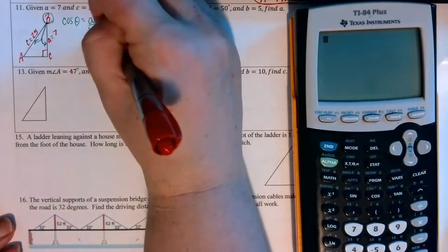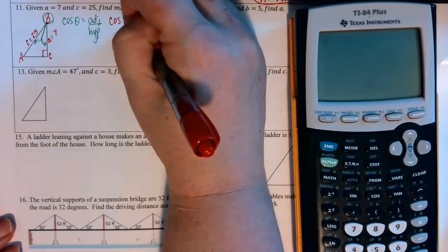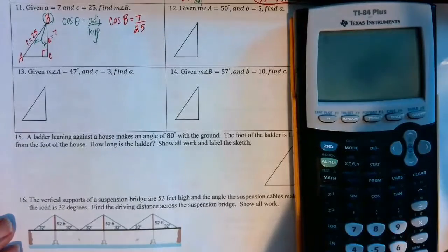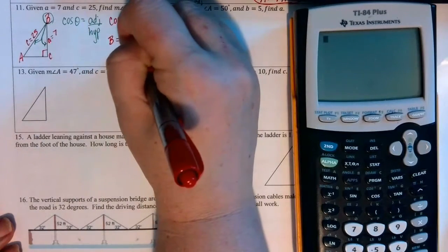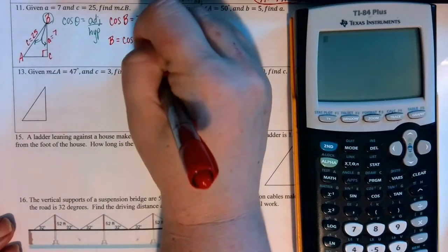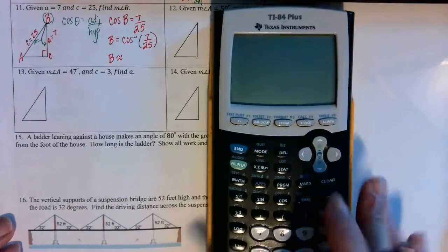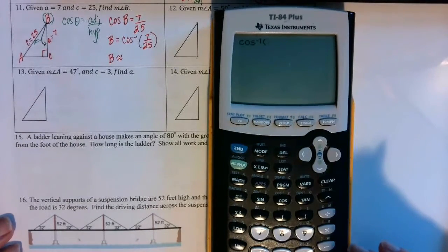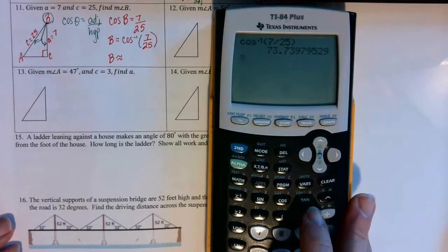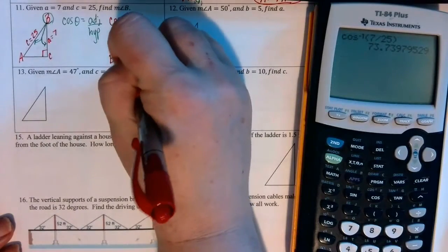So the cosine of angle B is equal to 7 divided by 25, and we take the cosine inverse of both sides, so B is equal to the arc cosine of 7 over 25. In degree mode in the calculator, arc cosine of 7 over 25, rounding to two decimal places, is 73.74 degrees.